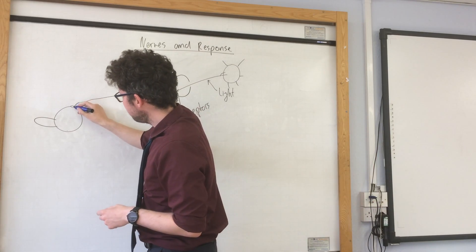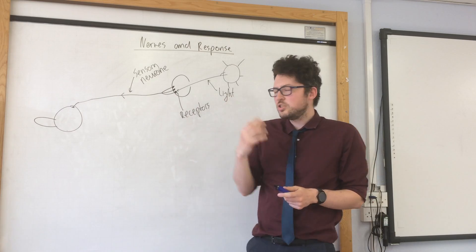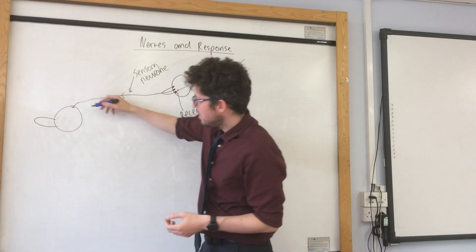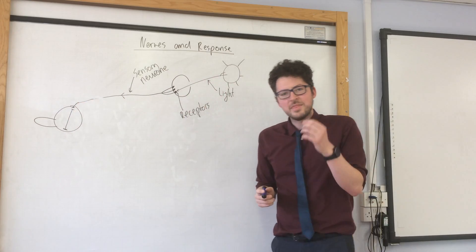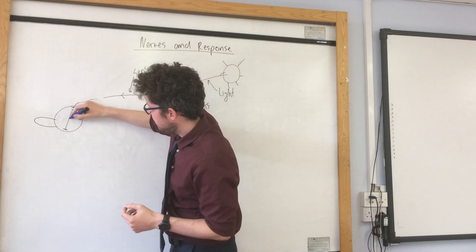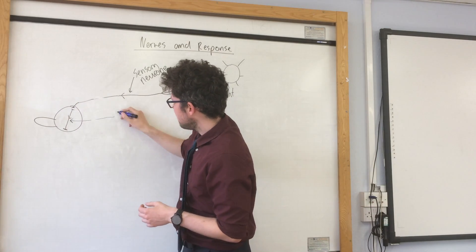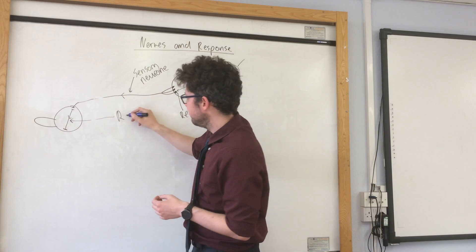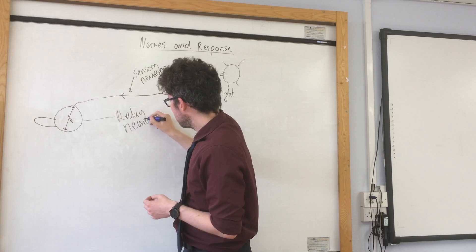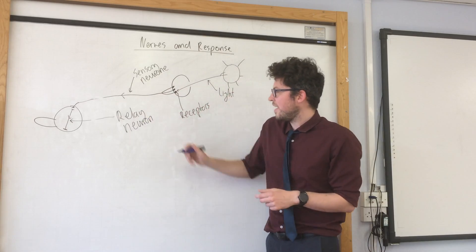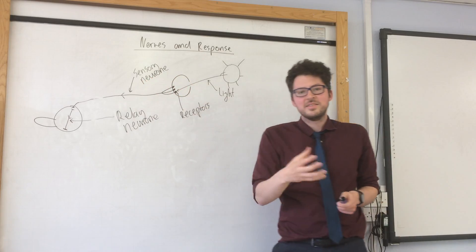Once it reaches it, it transmits that impulse into the brain and spinal cord. So here we have another neuron and this neuron is called a relay neuron. So the impulse is travelling that way and this is a relay neuron. You can kind of think of that as carrying the baton between the sensory neuron and the next neuron.